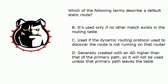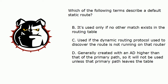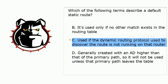Choice B — it's used only if no other match exists in the routing table — that is a dead-on description of a default static route. Now, choice C is what I call a nonsense answer. If the dynamic routing protocol used to discover the route isn't running on that router, you wouldn't have the route in the first place — the dynamic route. So we can definitely get rid of that one.